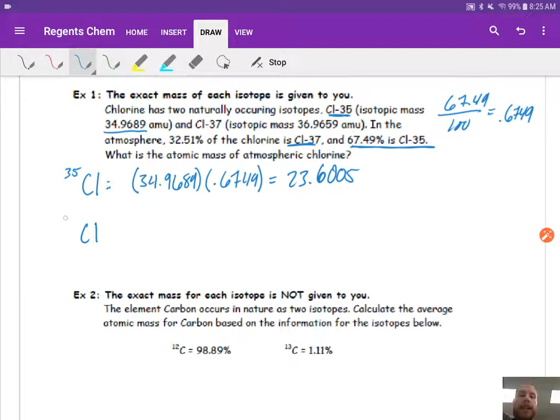We're going to do the same thing for our other isotope. So in this case, we only have two isotopes, but if we had more, we would just continue the process. So our exact mass of chlorine-37 is actually 36.9659. We're going to multiply it by its percentage. Make sure you convert it to a decimal first, so 0.3251. And when we do the math, go to the calculator, 12.0176.